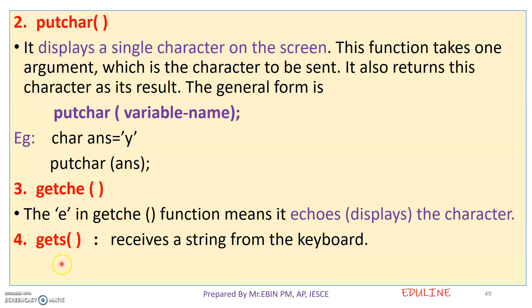Next is gets. Gets receives a string from the keyboard. If the string receives input from the keyboard, it uses gets — which means 'get string'. This function is used to receive a string. We can type a new word or a sentence using the keyboard.